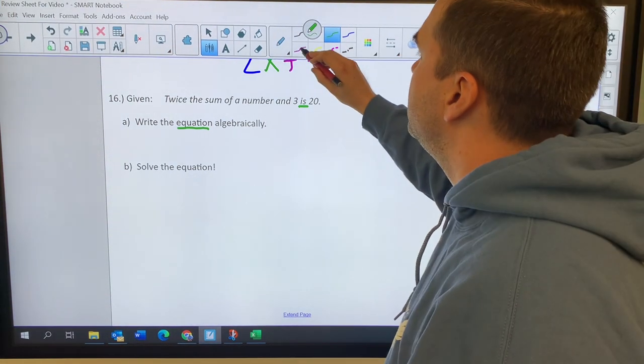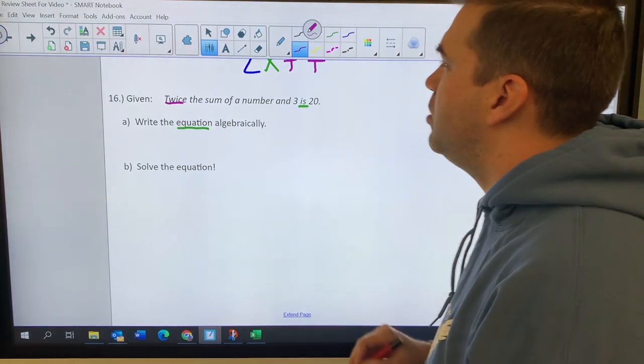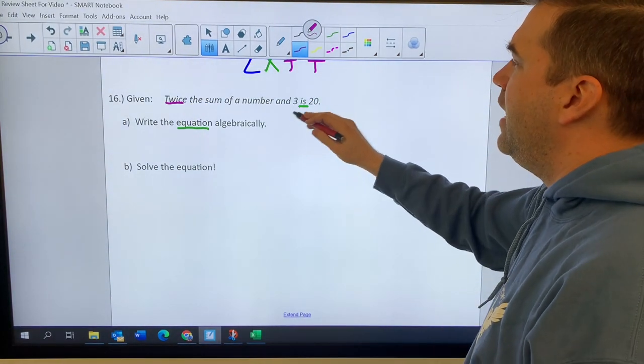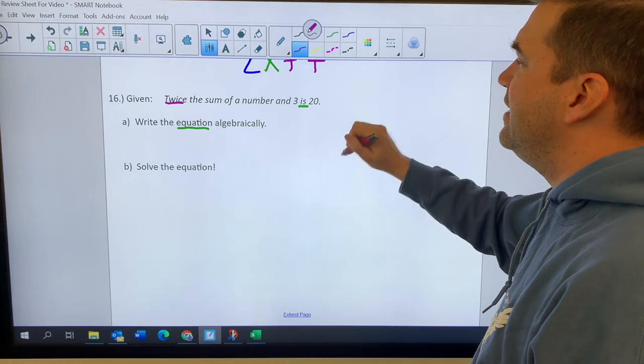So twice the sum of a number. We've got that twice again. That's telling us to multiply by two. The sum of a number and three is 20.